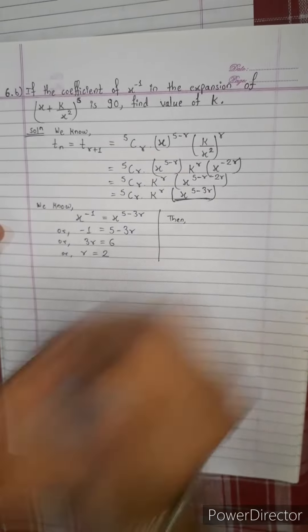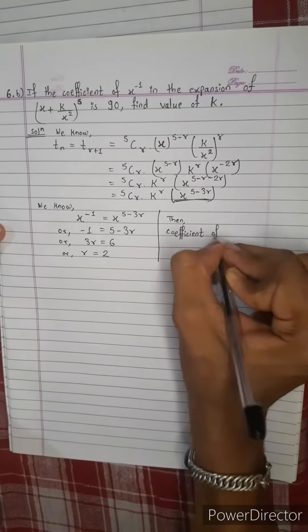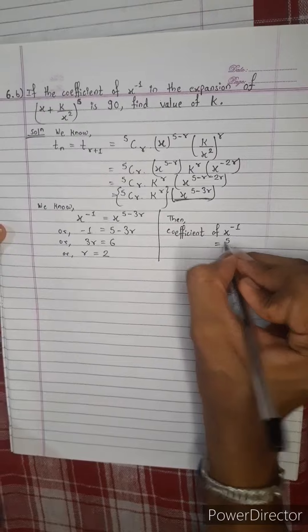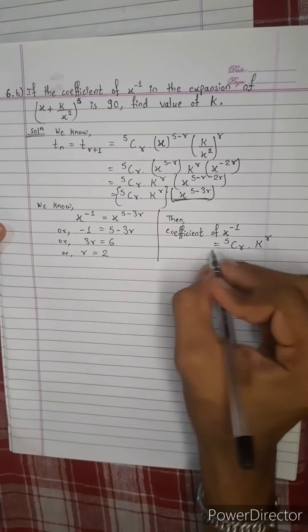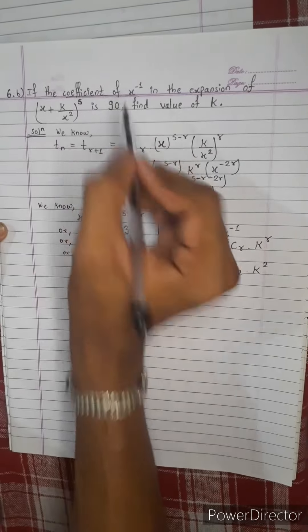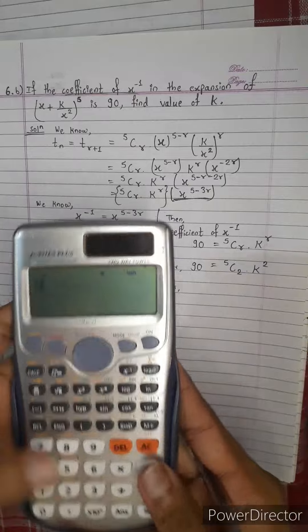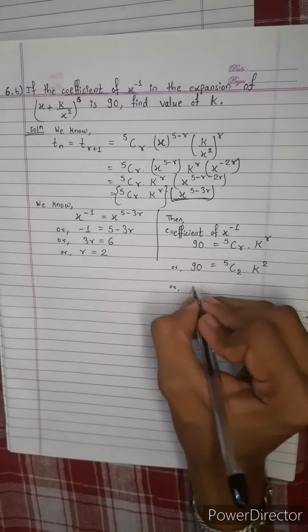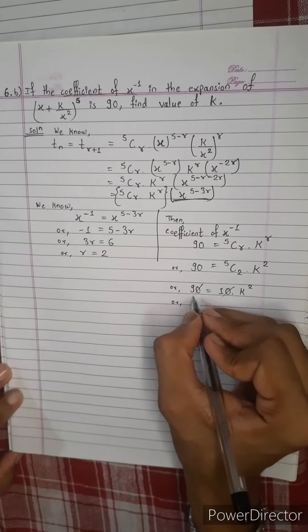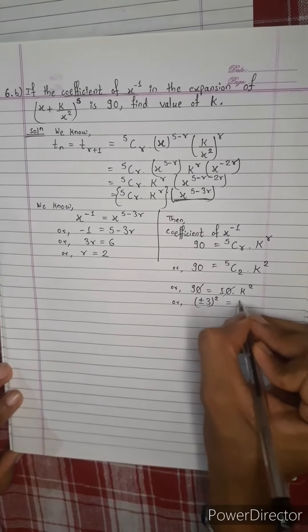The coefficient of x power minus 1 equals 5Cr · k power r. So 5C2 · k squared equals 90. The coefficient is 90. 5C2 equals 10, so 90 equals 10k squared, giving 9 equals k squared. That means plus or minus 3 whole squared equals k squared.